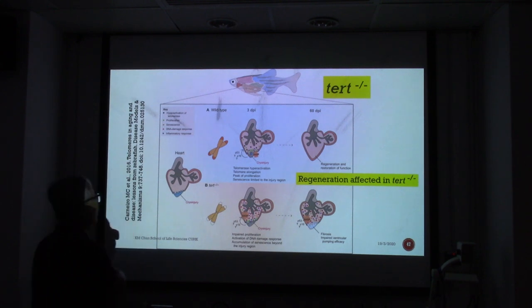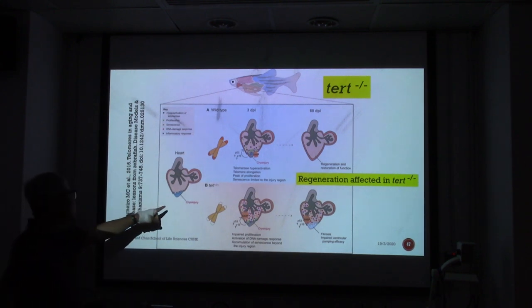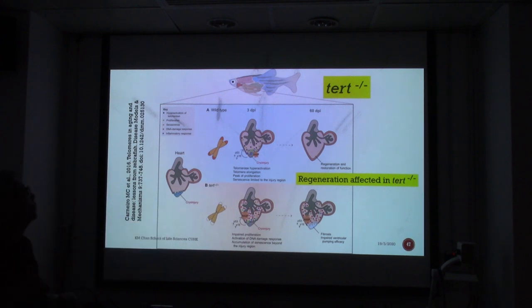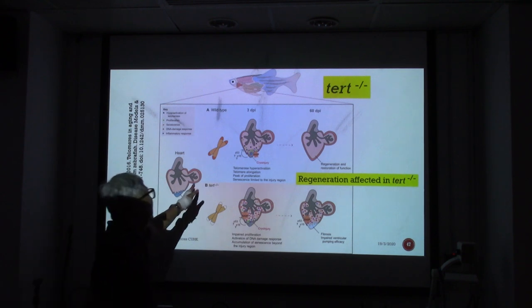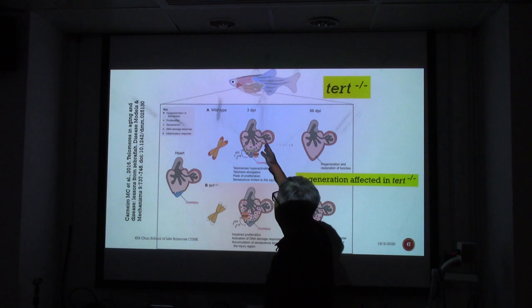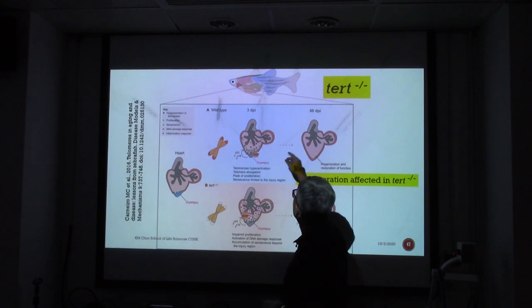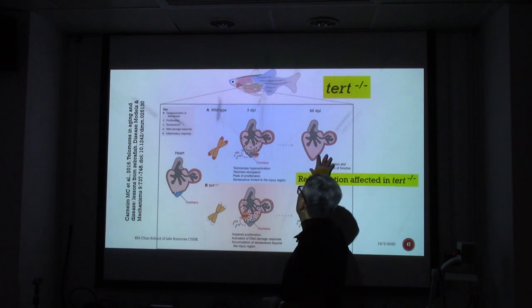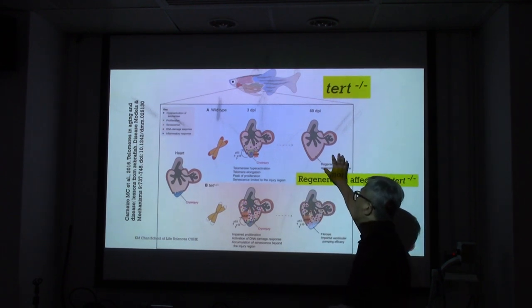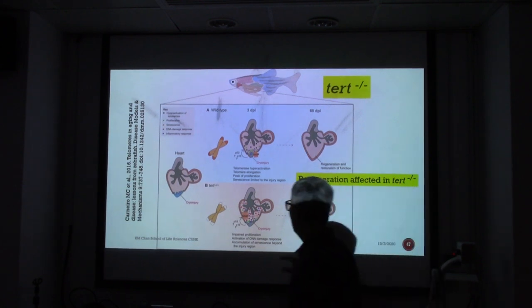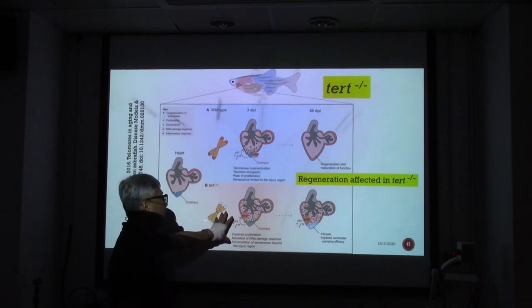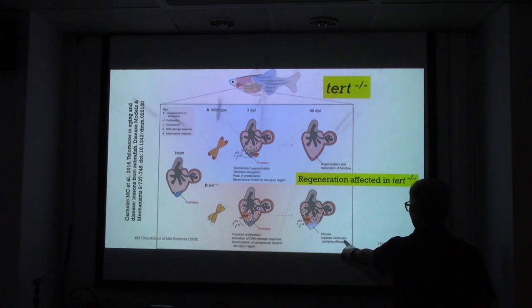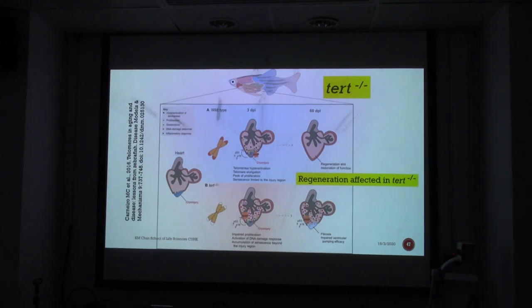Another major advantage of zebrafish is for studying regeneration. One example uses cryoinjury — a frozen needle touches the heart valve — and the mutant is observed three days after injury and then sixty days after injury. In the wild type, the valve tissue with all different tissues is repaired and function restored. However, in this particular mutant, after wild-type injury, fibrosis forms and impaired ventricular pumping efficacy cannot be restored.